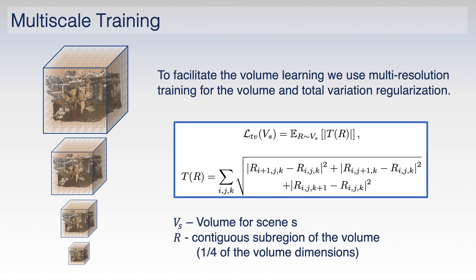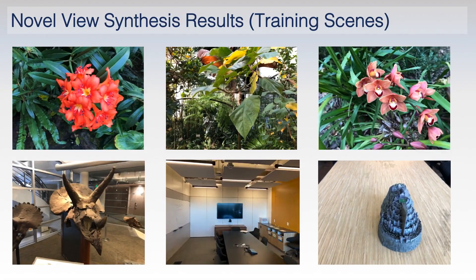To facilitate the learning, we use multi-resolution training for the volume and total variation regularization. The multi-resolution training allows us to learn small volumes during earlier stages of the training and slowly grow them over time. The total variation regularization ensures that the volumes are locally consistent by requiring neighboring voxels to have similar feature values.